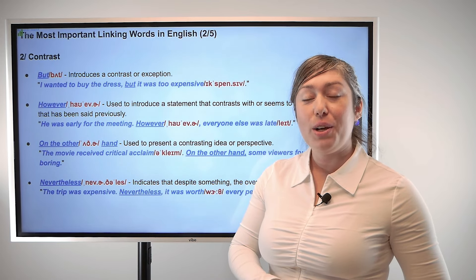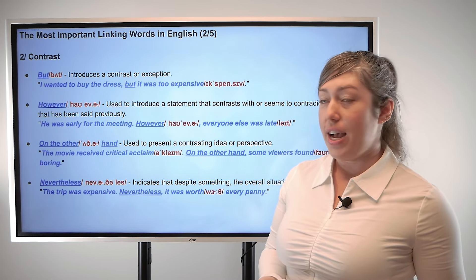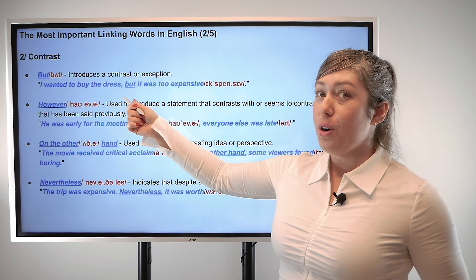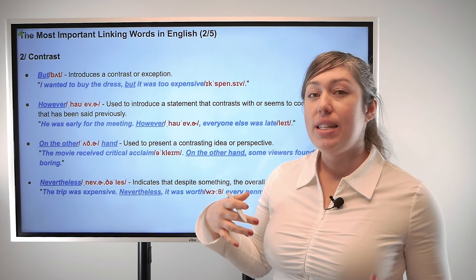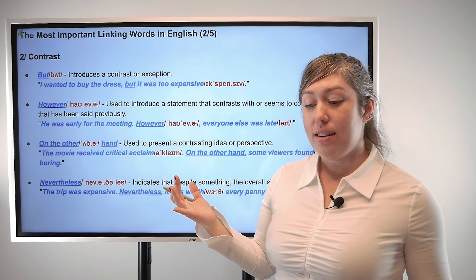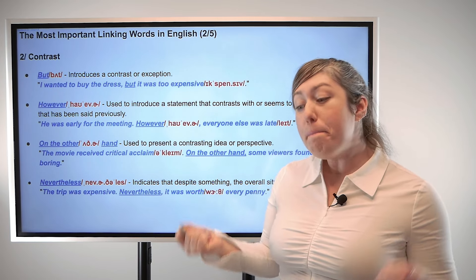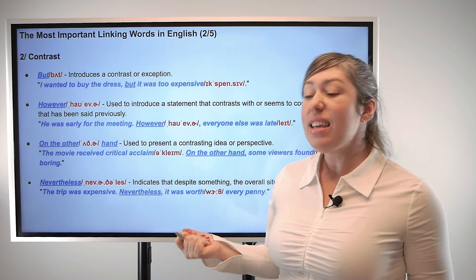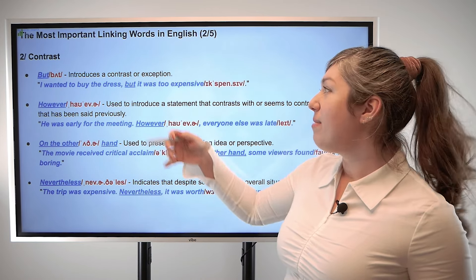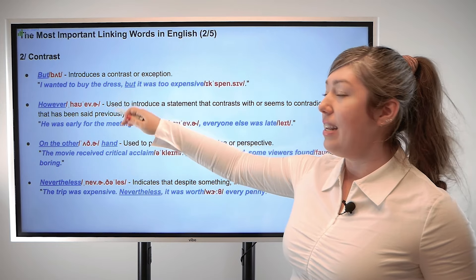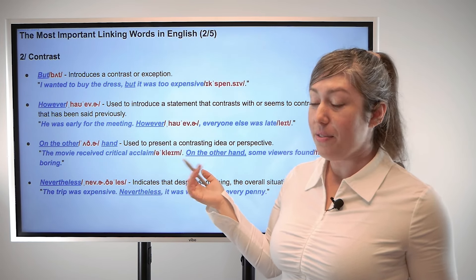So the next category of linking words that we'll look at are contrast linking words. Of course, you've heard this word before, but it introduces a contrast or an exception. For example, I wanted to buy the dress, but it was too expensive — so even though I wanted to do something, the exception is I didn't have the money for it.